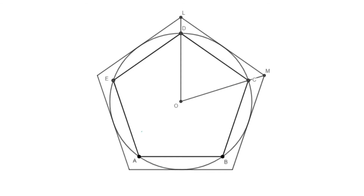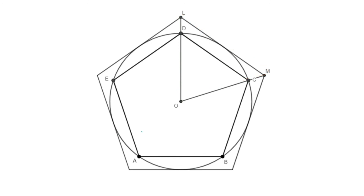To compare the areas of the inner and outer pentagons, we compare triangles OCD and OLM. Since DC and LM are parallel, angle ODC equals angle OLM and angle OCD equals angle OML, so triangles OCD and OLM are similar.